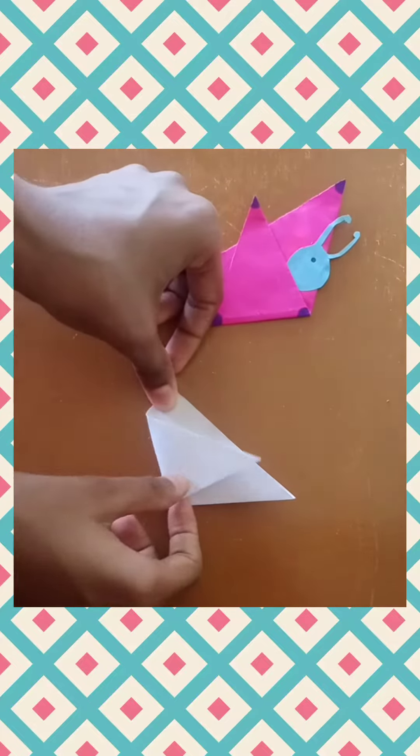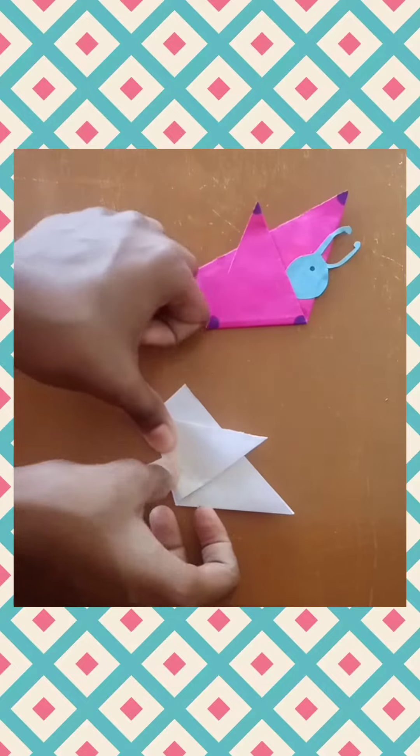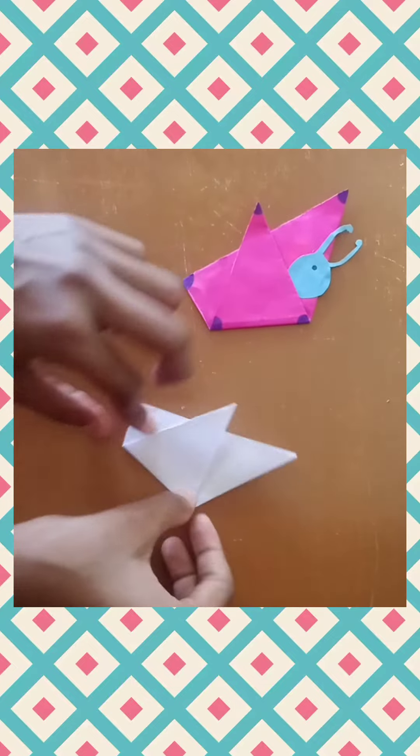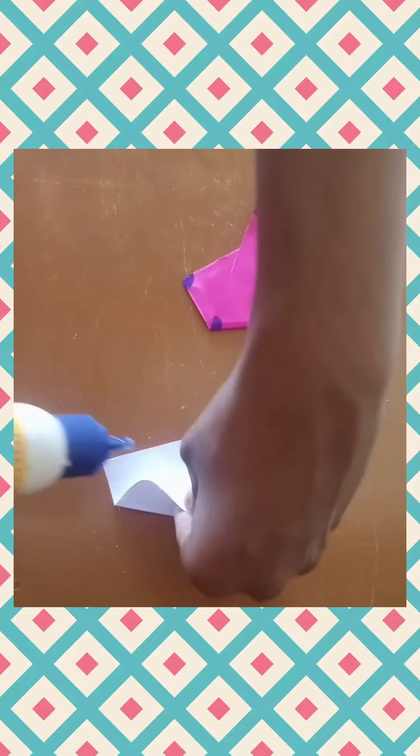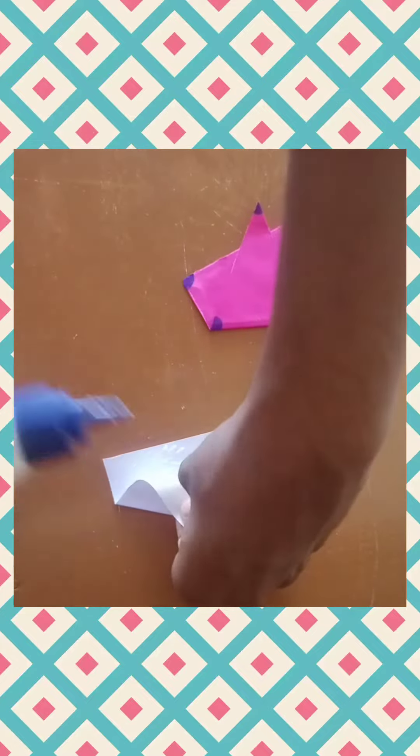Fold the lip side flap upwards like this. Now the butterfly's body is ready. You can paste it using Fevicol or a glue stick.